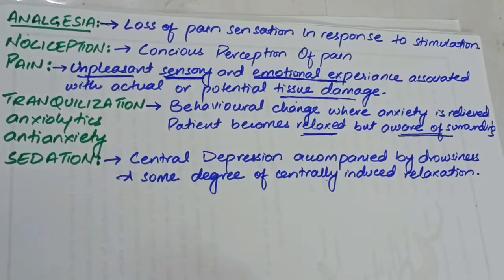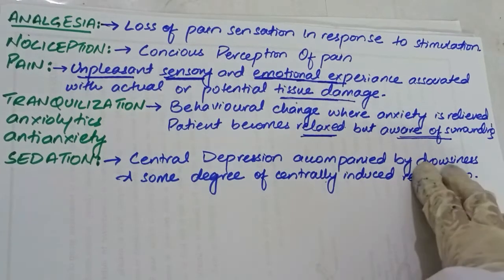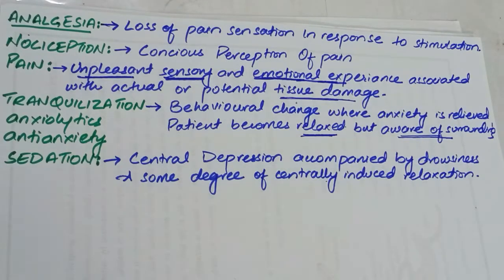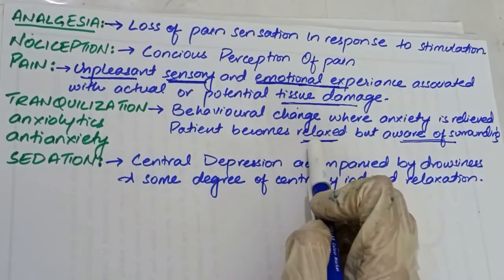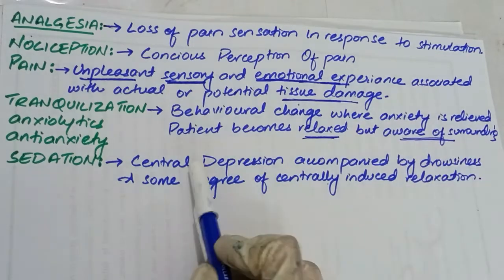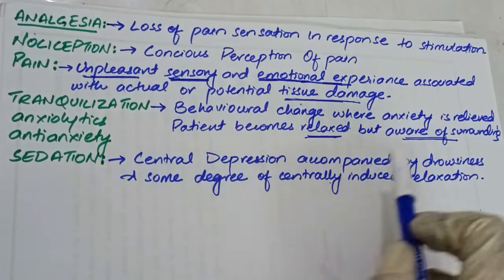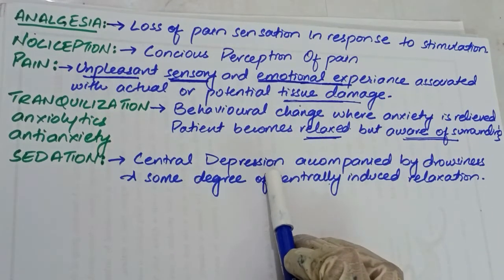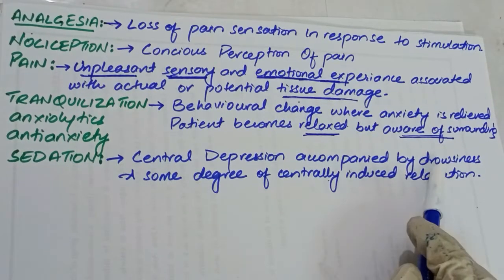Sedation is defined as central nervous system depression accompanied by drowsiness and some degree of centrally induced relaxation. The animal will be drowsy. The difference from tranquilization is that tranquilizers are anti-anxiety drugs — the animal is relaxed but not unconscious. In sedation, there is a general CNS depression with drowsiness, but not deep enough to be called anesthesia.